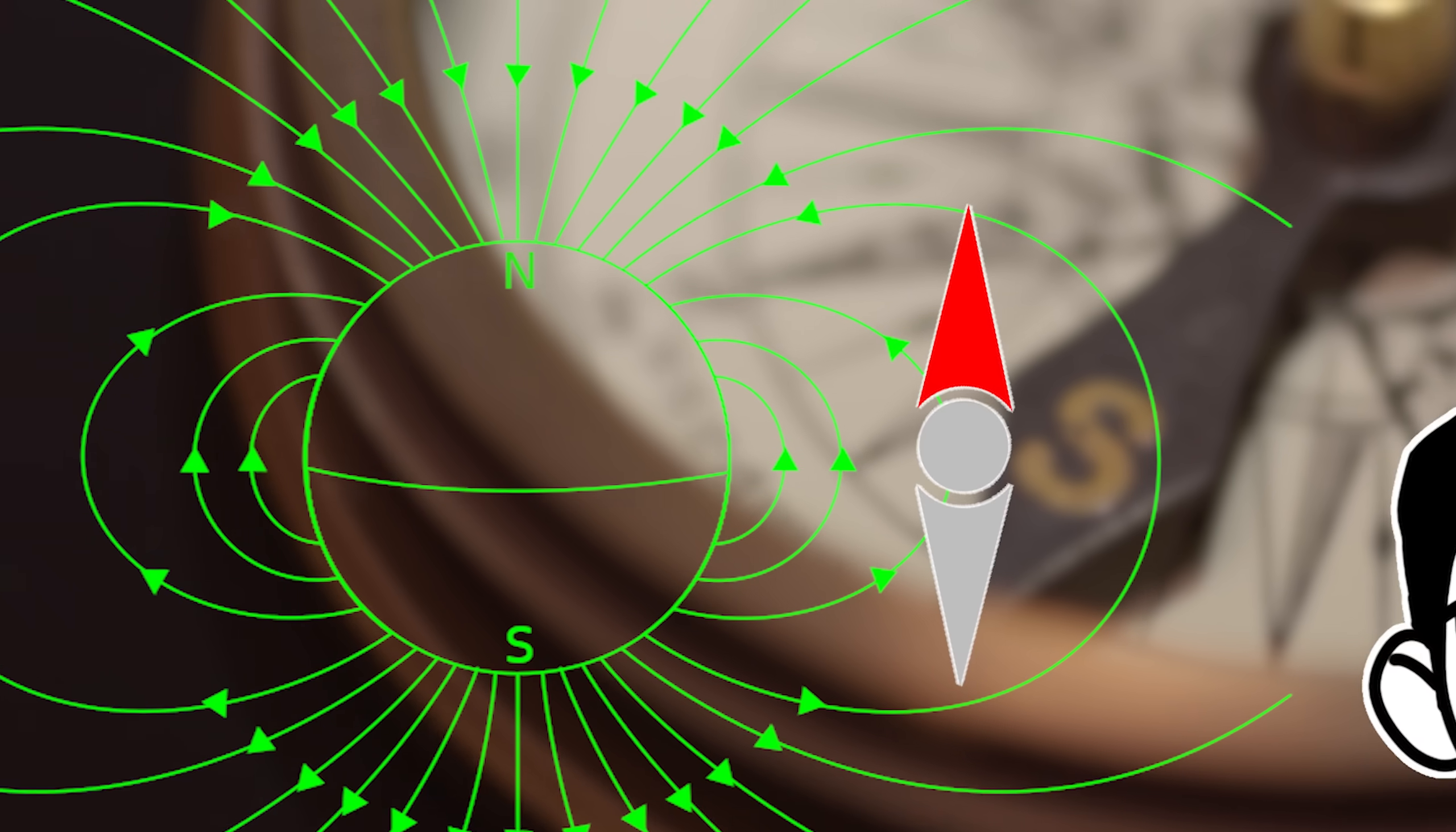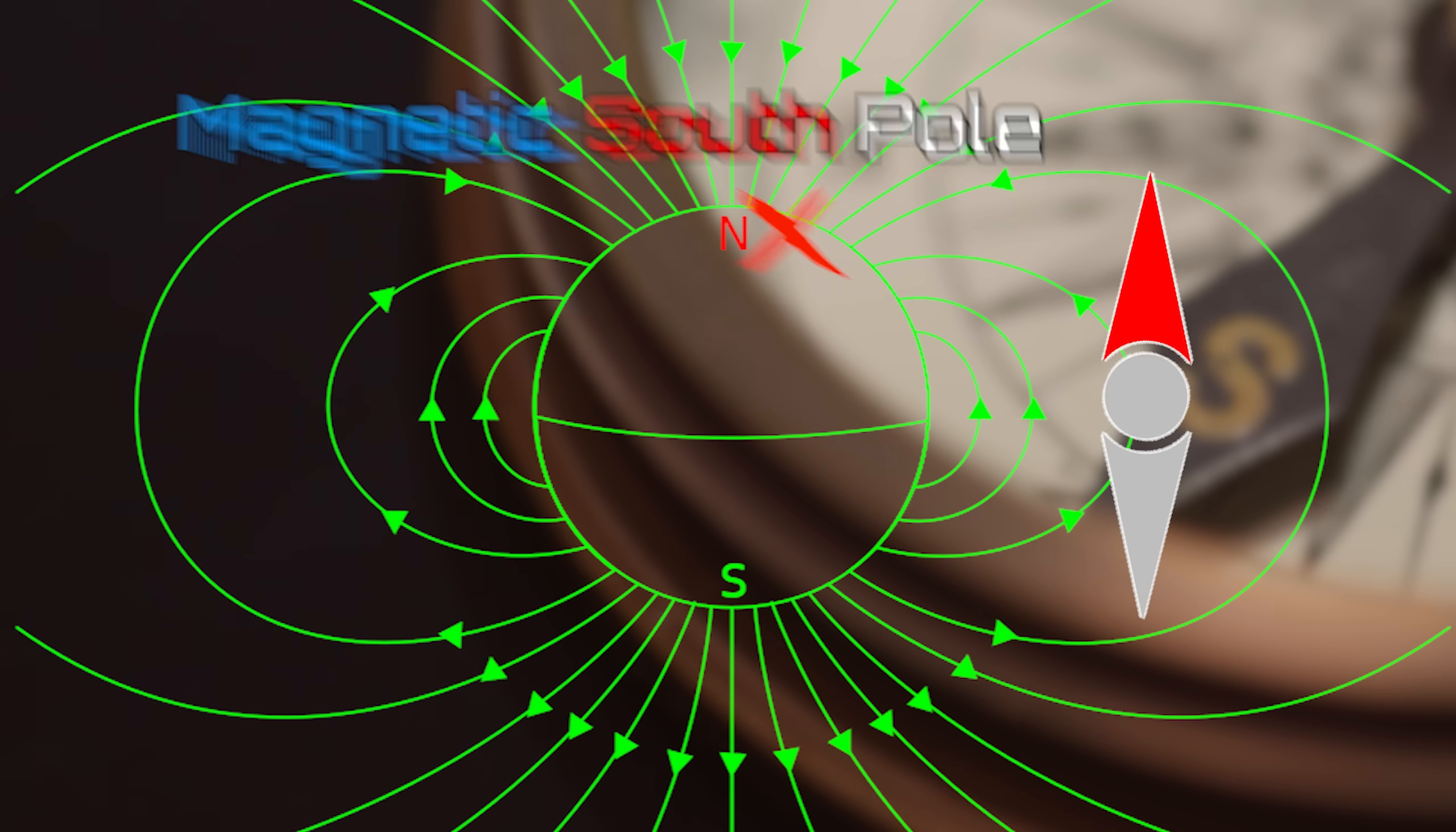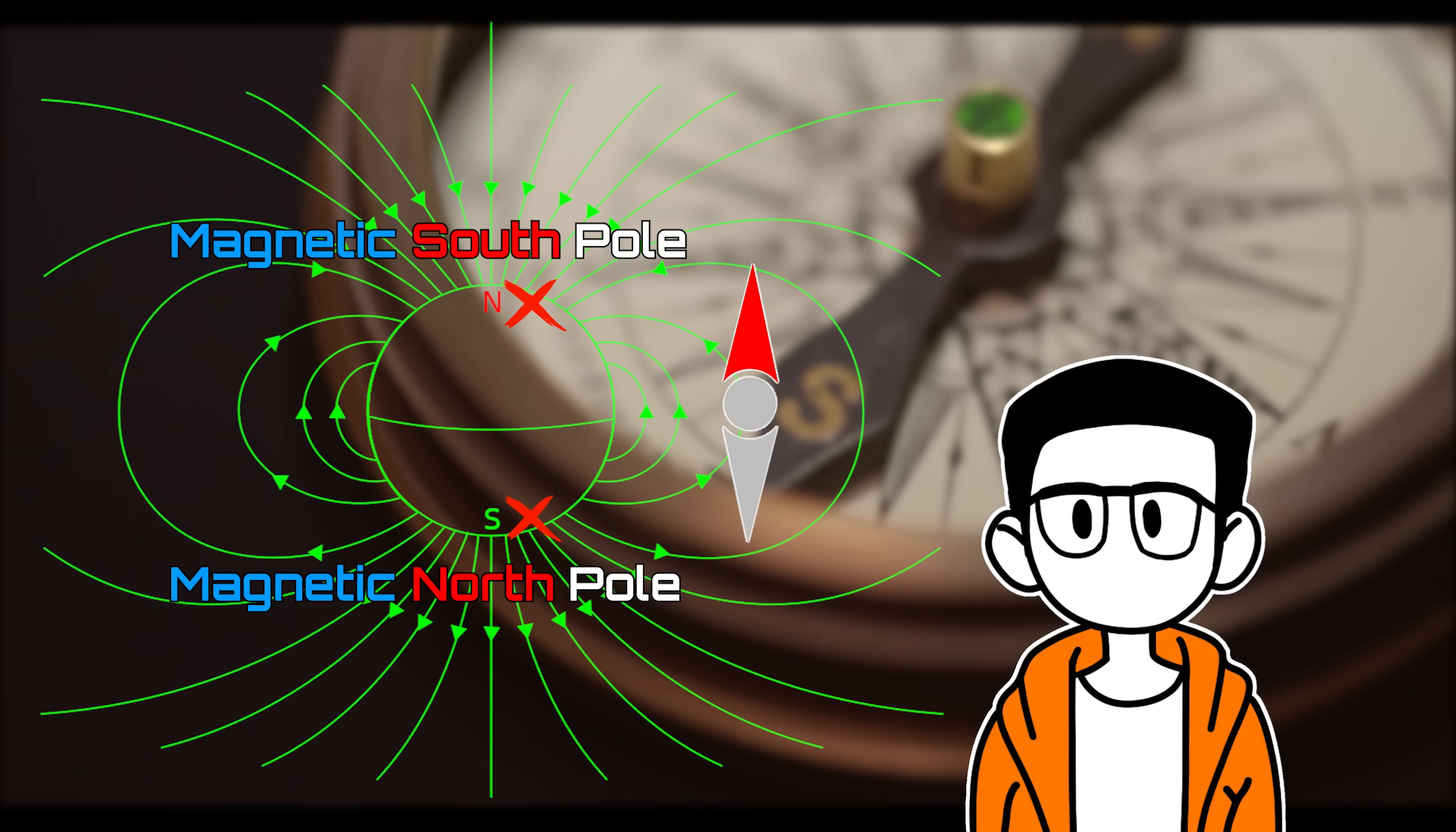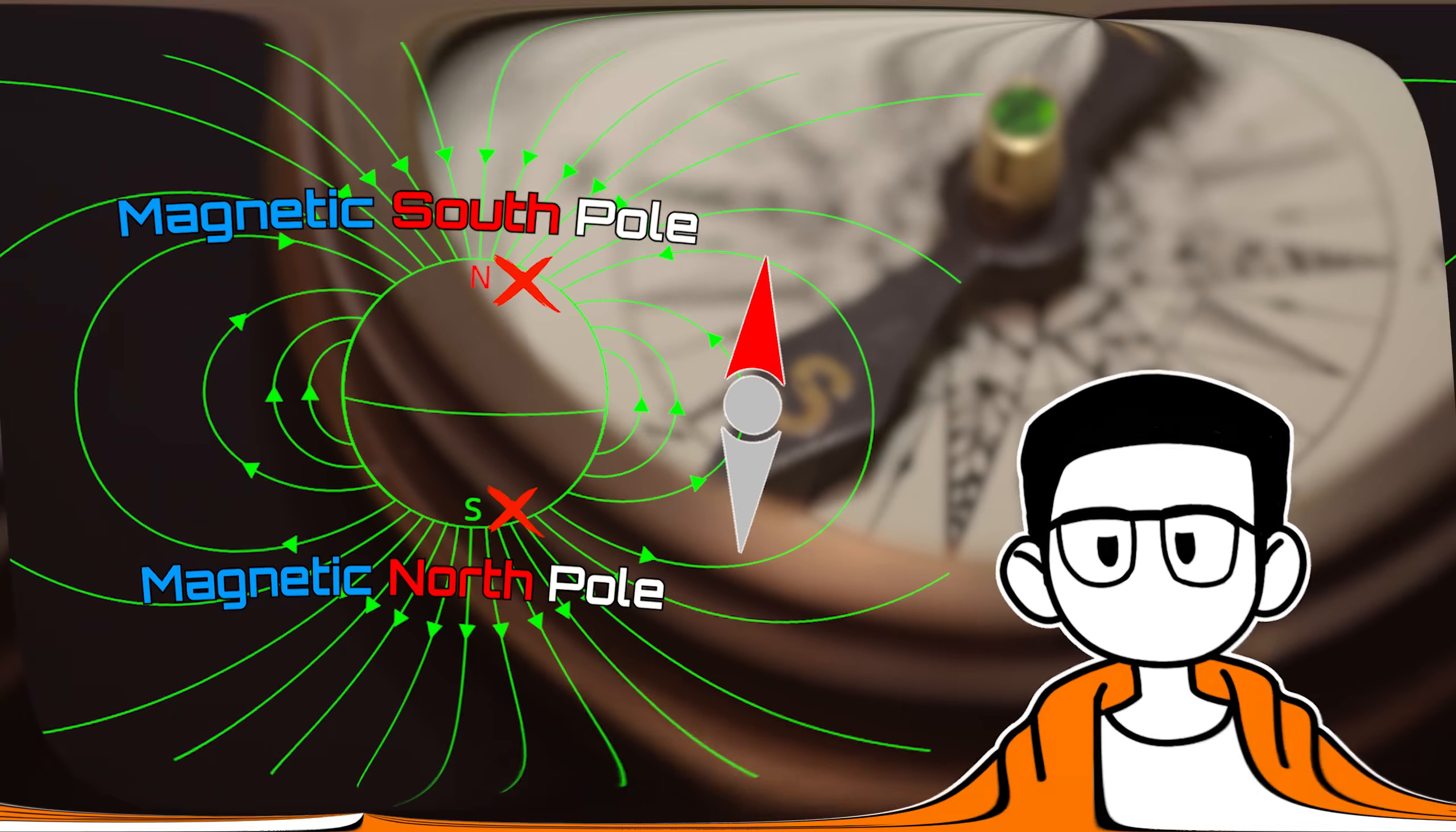Even though technically the magnetic south pole of Earth is actually in the north pole and the north pole is actually the south pole. Regardless, you were today years old when you learned why they call it the north and south pole in the first place.